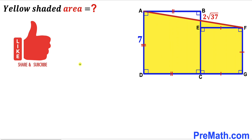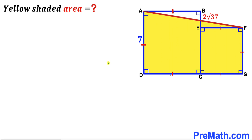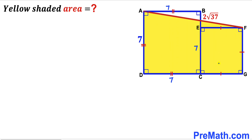Please don't forget to give a thumbs up and subscribe, and keep in mind that this figure may not be 100% true to scale. Let's get started. We focus on the larger square ABCD — its side length is 7, so all side lengths are 7 units. Now we focus on the smaller square EFGC, whose side length is unknown.